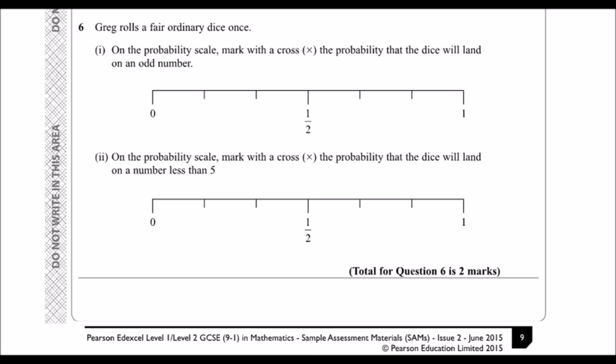Okay, Greg rolls a fair ordinary dice once. On the probability scale mark with a cross the probability that it will land on an odd number.